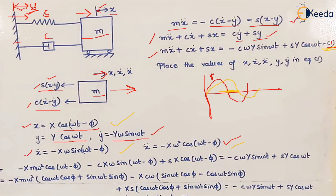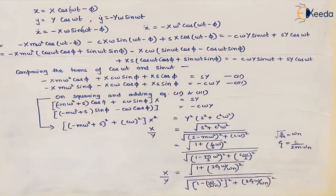We now expand the equation by opening the brackets and applying trigonometric identities: cos(a - b) = cos a cos b + sin a sin b, and sin(a - b) = sin a cos b - cos a sin b. Expanding all the trigonometric functions gives the final expanded equation.